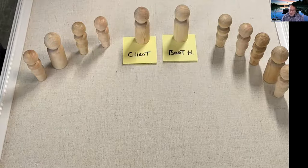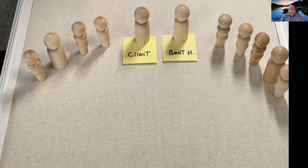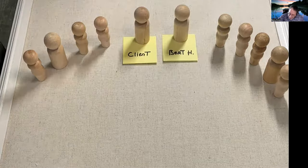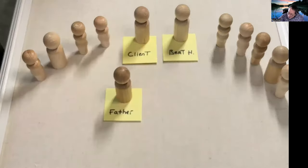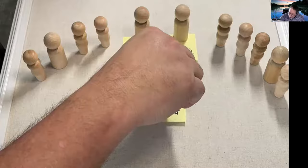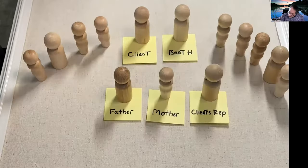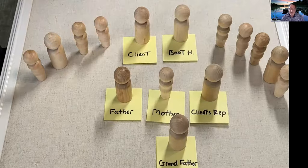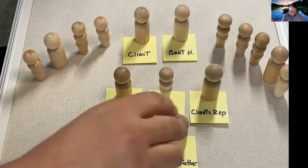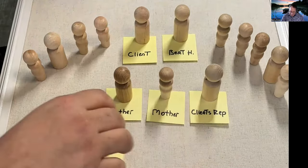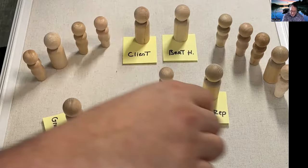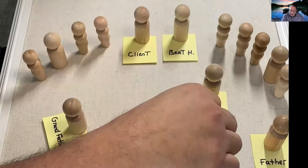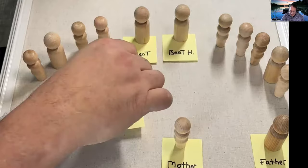So perhaps Bert Hellinger asked the client to pick people from the audience to represent the mother, his father, himself, and the grandfather. So let's bring in client's father and the client's mother and a representative for the client and a representative for the grandfather. Then Bert would ask the client to arrange these representatives in the order that made the most sense. So perhaps when he does this, the grandfather is looking this way. The father is over here, sort of away from it. The mother is sort of distance from everything here. And the client places his rep near the grandfather.